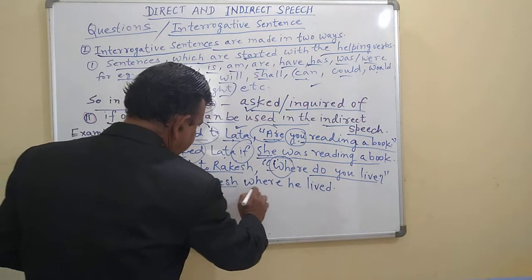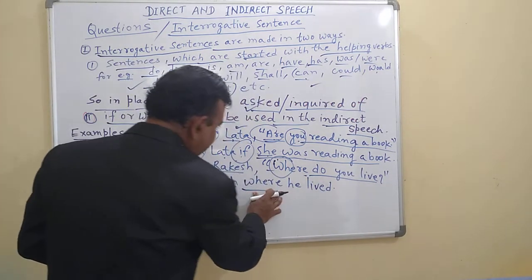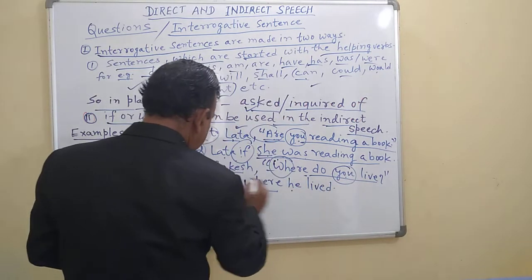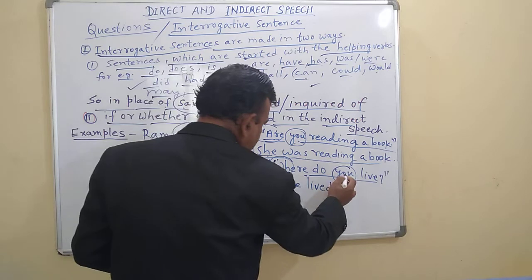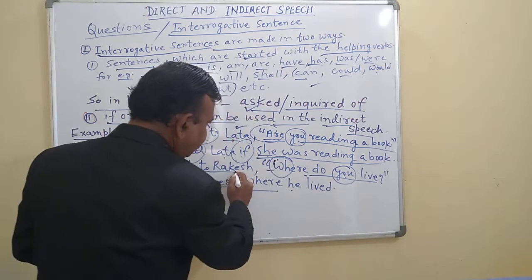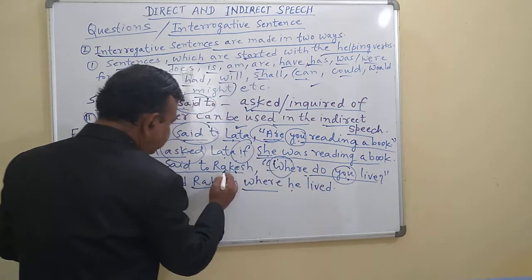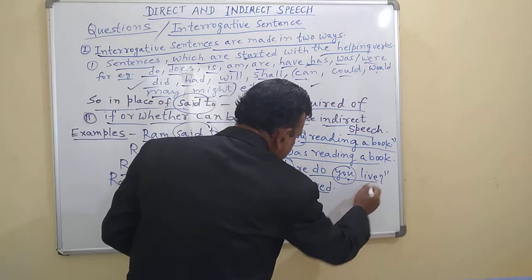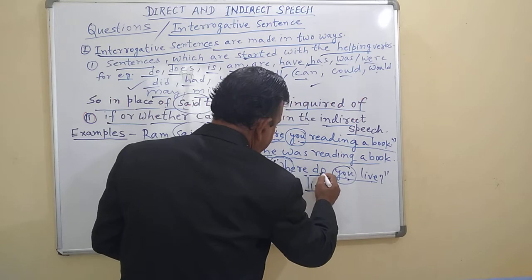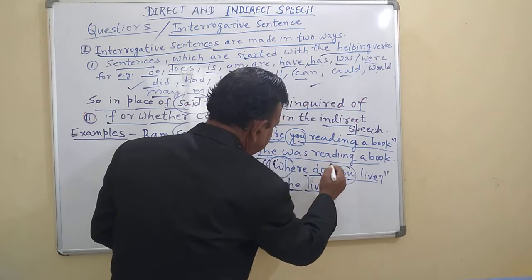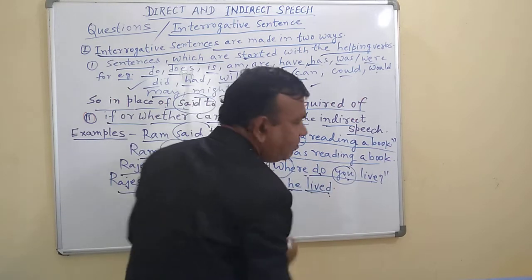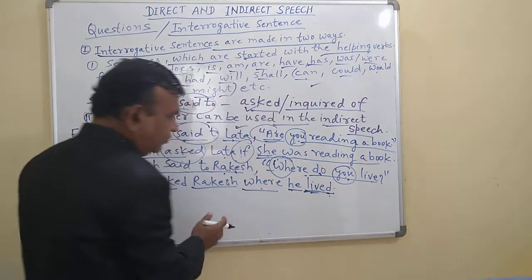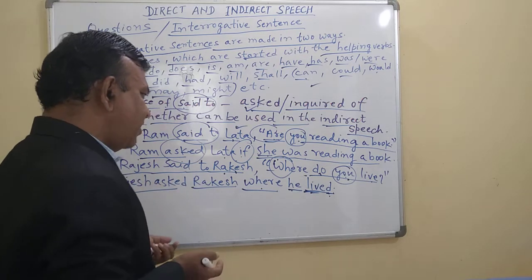Rajesh asked Rathis where he lived. This 'where' will come as it is. Here 'you' changes into 'he' because Rathis is third person — the second person always changes according to the object. And 'live' changes into 'lived' because simple present changes into simple past.